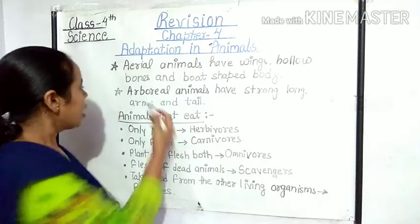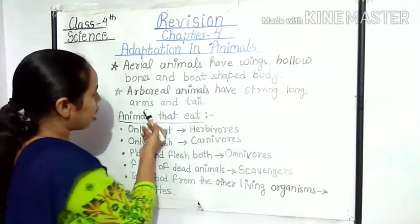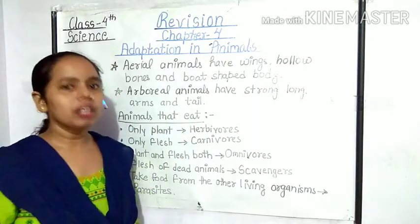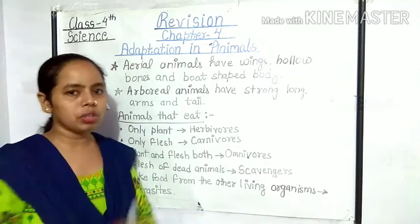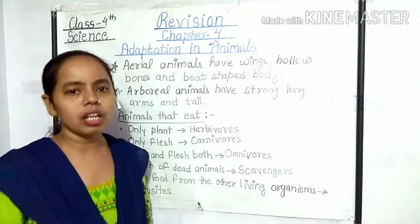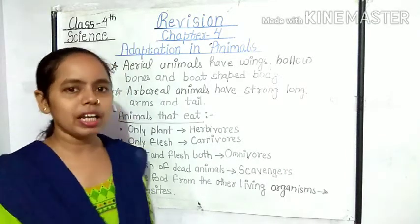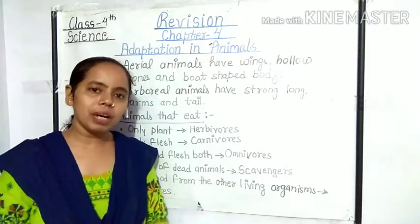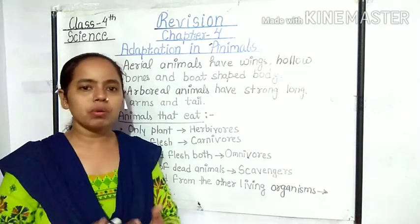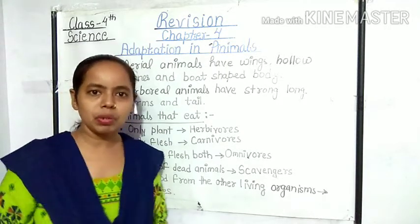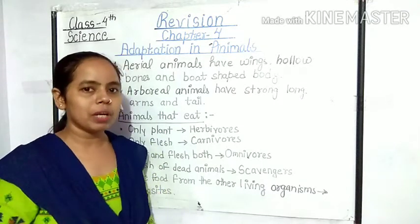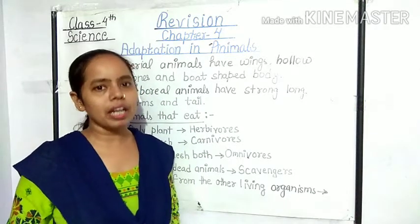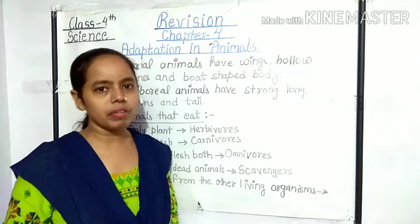Next है arboreal animals. Arboreal animals have strong and long arms and tail that help them to spend most of their time on trees. जो हमारे arboreal animals होते हैं उनकी arms बहुत ही strong होती हैं जो trees की branch को पकड़ने में बहुत ही help करती हैं। एक tree से दूसरे tree पर jump लगाना, झूलना, कूदना — इन सब में उनकी लंबी और strong arms बहुत ही help करती हैं।